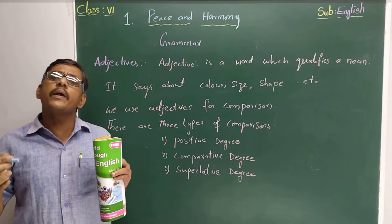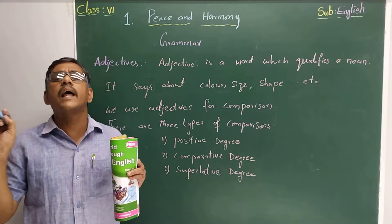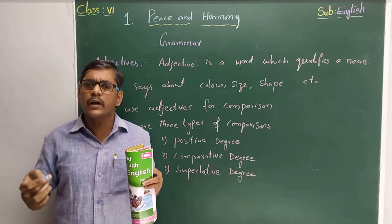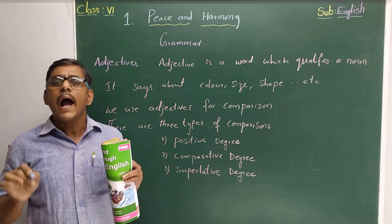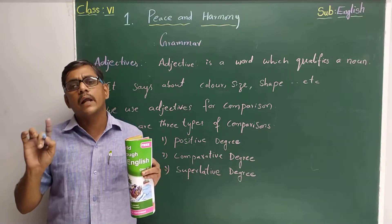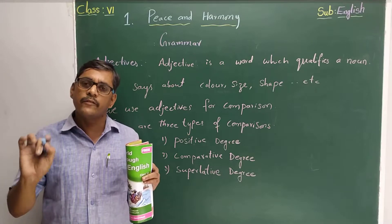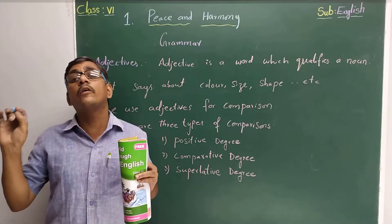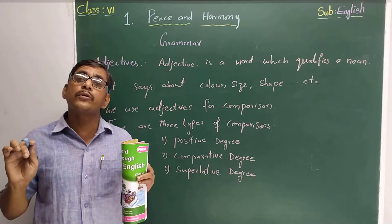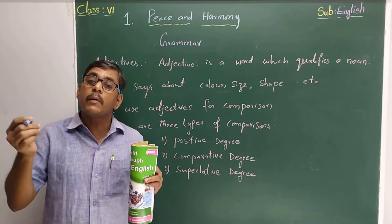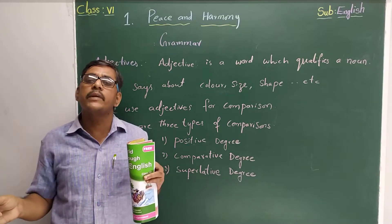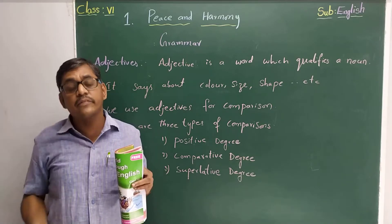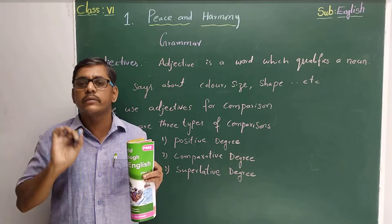After adjective we come to verb. Verb is a word that denotes an action — to express our actions, we use a verb. After that we come to adverb. Adverb is a word that qualifies an adjective, a verb, and another adverb. So adverb has three roles: sometimes it qualifies an adjective, sometimes it qualifies a verb, and sometimes it qualifies itself. So it has three functions.